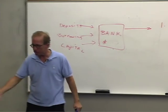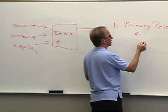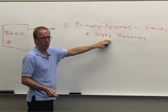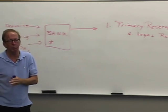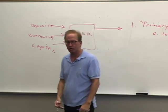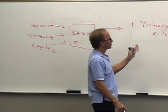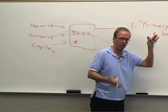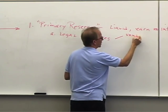Primary reserves include dollars in the vault and dollars deposited at the Federal Reserve — these are legal reserves. These are unofficial terms that money and banking professors use to break assets into functional categories by purpose. Legal reserves are either in the vault or at the Fed.